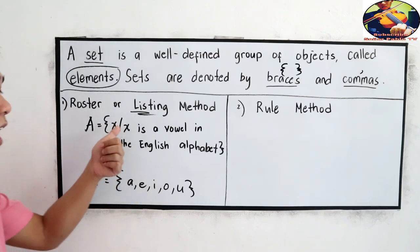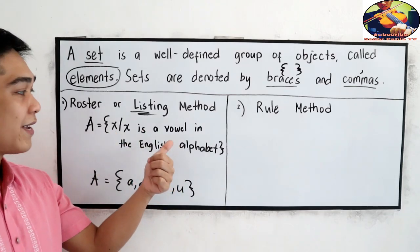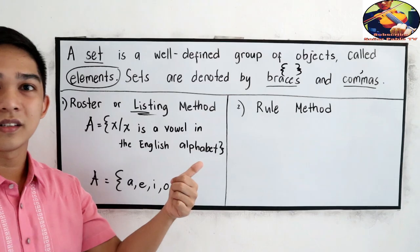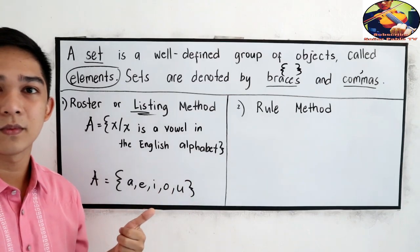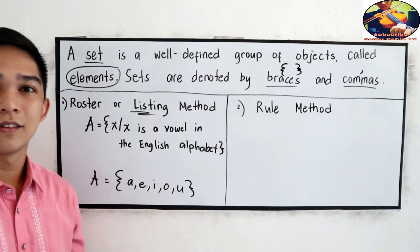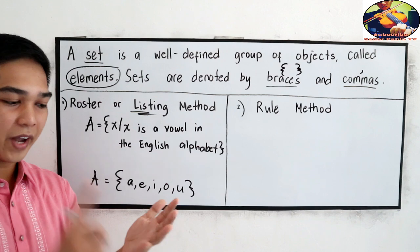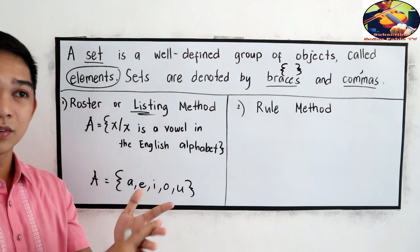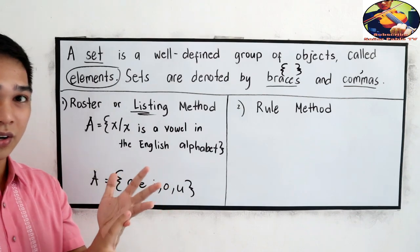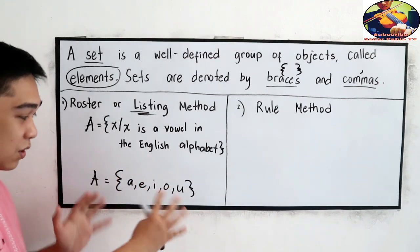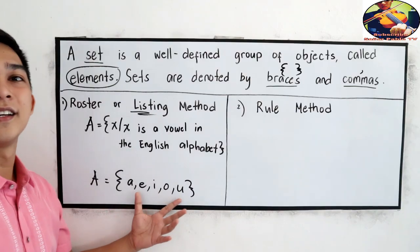Let's say we have x such that x is a color in a rainbow. So we have red, orange, yellow, green, blue, indigo, and violet. You're going to list those in our set.